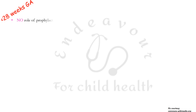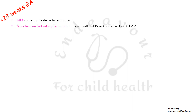As per the NNF clinical practice guidelines, for babies born less than 28 weeks of gestational age, there is no role of prophylactic surfactant — this is very important to remember. Selective surfactant therapy can be considered in babies less than 28 weeks gestational age with respiratory distress syndrome who are not stabilized on CPAP, so the initial modality in this age group also needs to be CPAP.